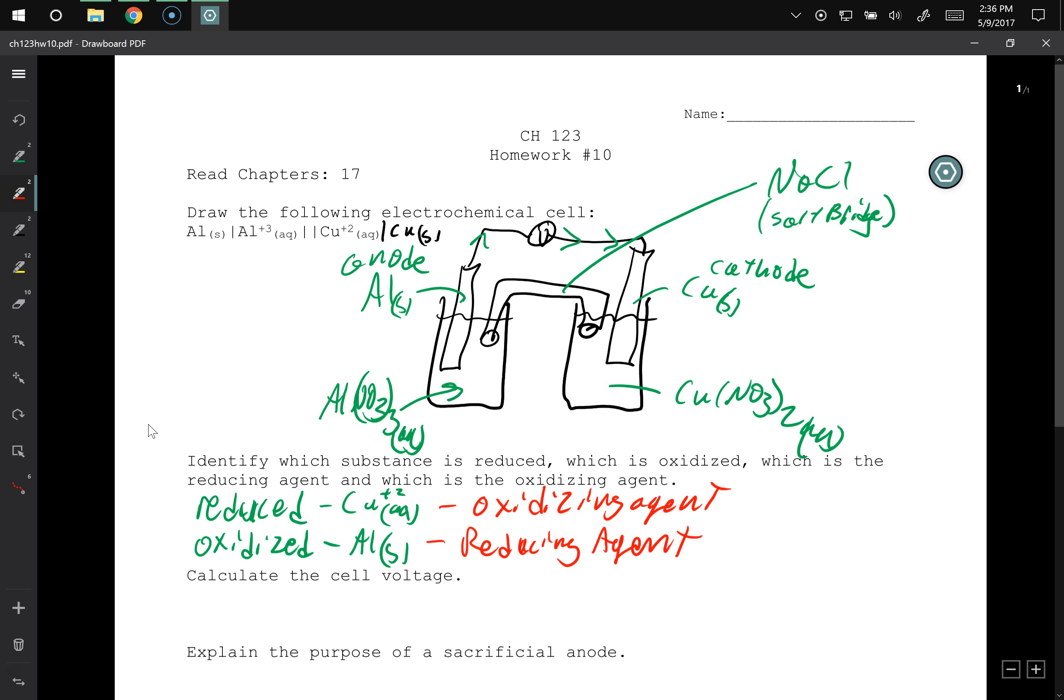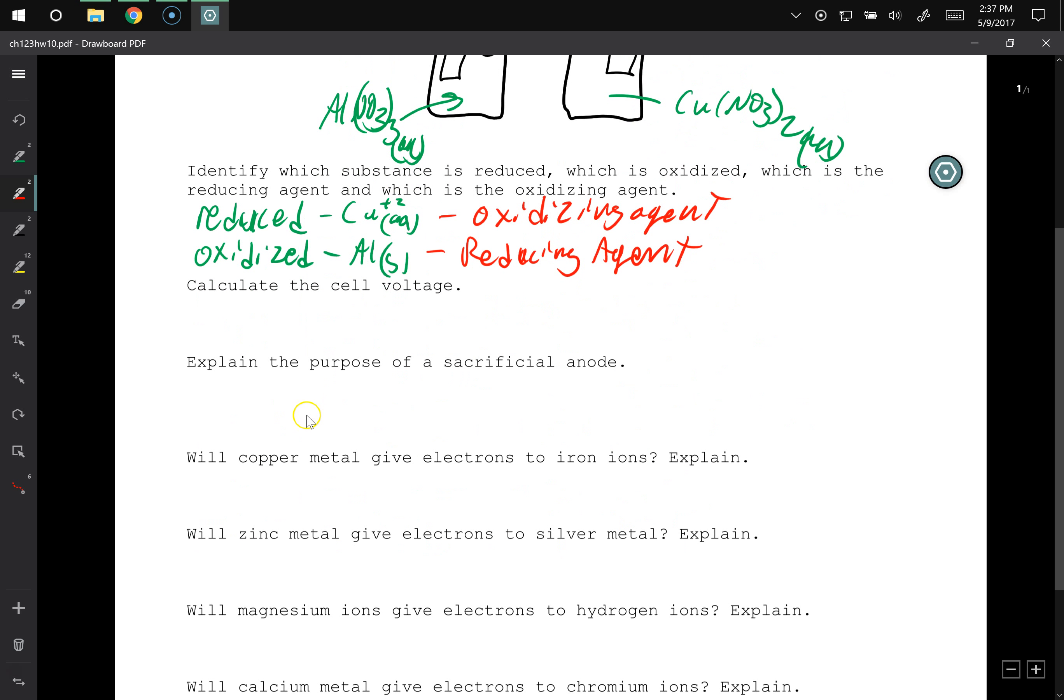Why is the copper ion the oxidizing agent? You need to say it the other way. It's oxidizing the aluminum. That makes it the oxidizing agent.